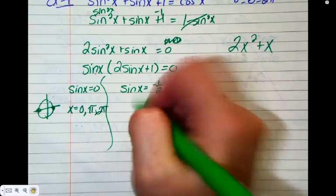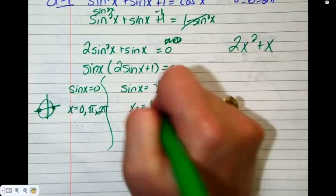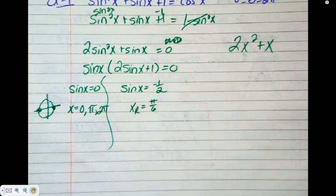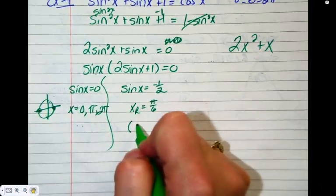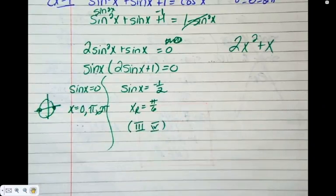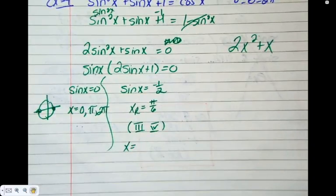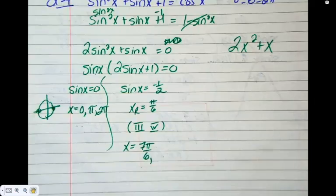Sine X equals negative 1 half. Reference angle or family. Which family has a sine value of 1 half? Sounds like an offer and a confirmation all at the same time. Quadrants. The pi on 6 family in quadrant 3. 7 pi on 6. And 11 pi on 6.